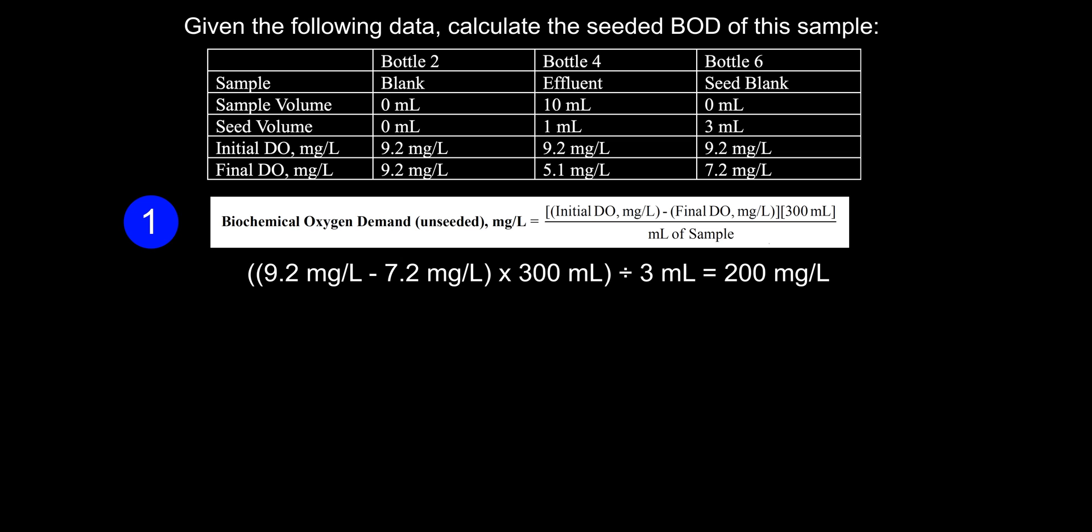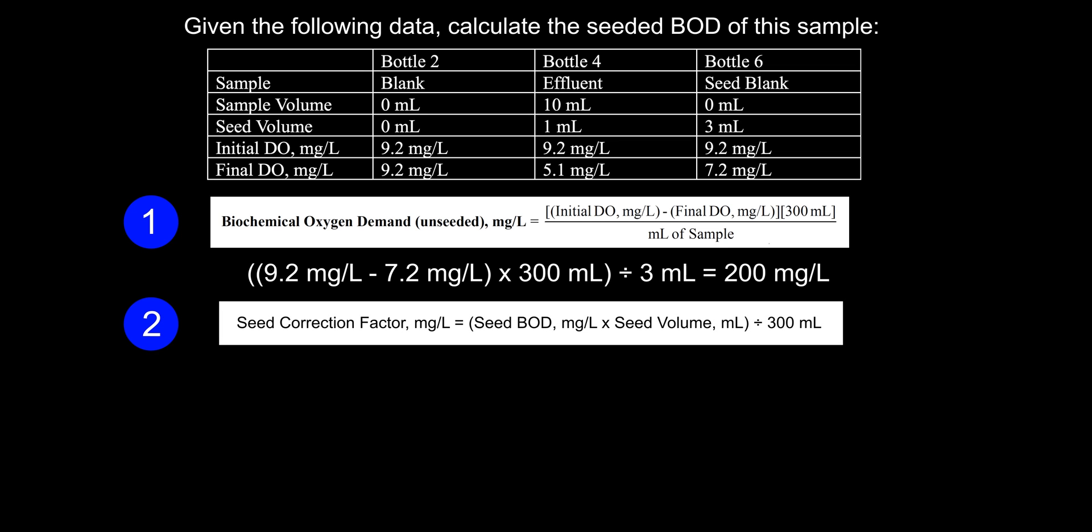With this, we can figure out how much dissolved oxygen the seed is consuming in any given sample. In our case, we're examining the effluent sample. Unfortunately, the equation for the seed correction factor in part two is not given to us on the exam. You will need to remember it. We take the seed BOD value from part one, 200 milligrams per liter, and multiply it by one milliliter, which is how much seed volume was used in the bottle four effluent sample. Then we divide that by 300 milliliters, giving us an answer of 0.66 repeating, which we round up to 0.67 milligrams per liter. This tells us that for every one milliliter of seed we use, it will consume 0.67 milligrams per liter of dissolved oxygen.